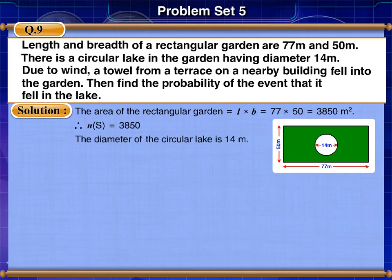The rectangular garden has a circular lake in it of diameter 14 meters. Therefore, the radius of the lake is 7 meters.